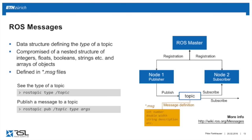On ROS topics, nodes publish messages. The message defines the data structure of information flowing from one node to others. Messages are comprised of simple types such as integers, floats, booleans, strings, and arrays of these objects. They can also be nested — one message can be included in another.